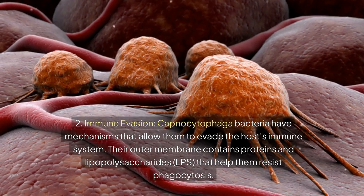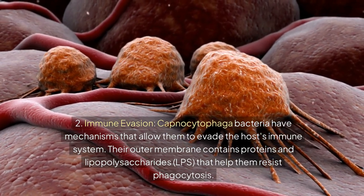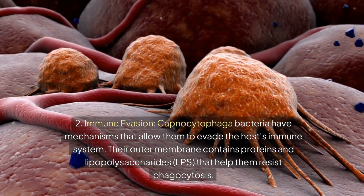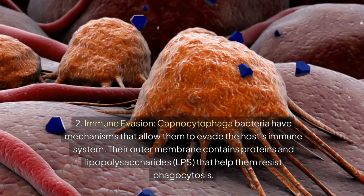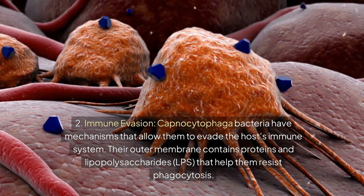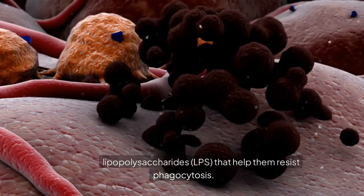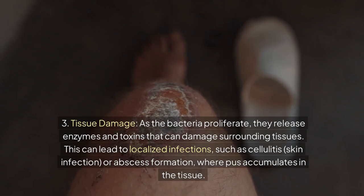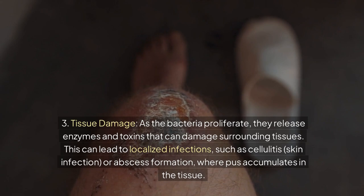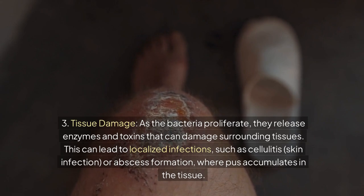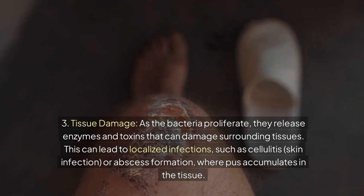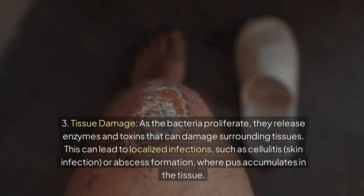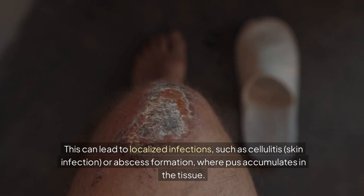2. Immune evasion — Capnocytophaga bacteria have mechanisms that allow them to evade the host's immune system. Their outer membrane contains proteins and lipopolysaccharides (LPS) that help them resist phagocytosis. 3. Tissue damage — as the bacteria proliferate, they release enzymes and toxins that can damage surrounding tissues. This can lead to localized infections such as cellulitis (skin infection) or abscess formation, where pus accumulates in the tissue.